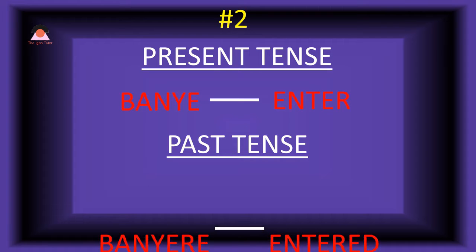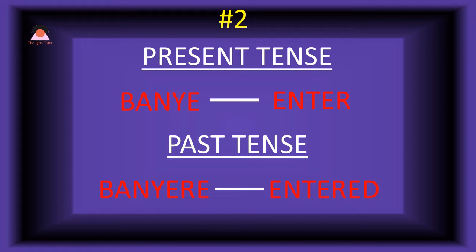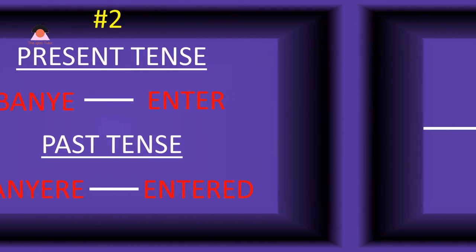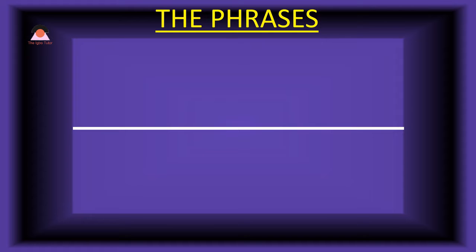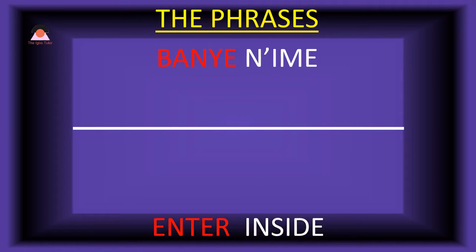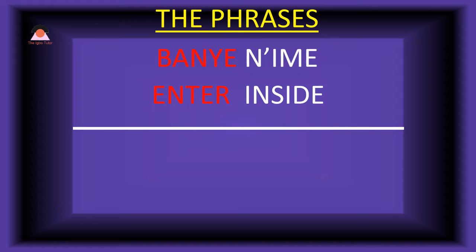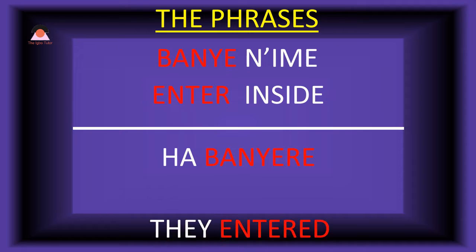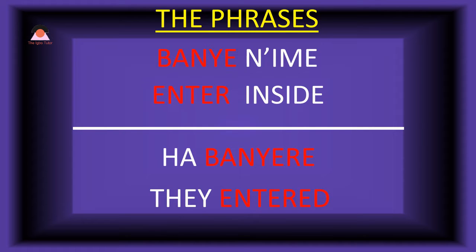Number two, present tense: 'banye,' which means 'enter.' And the past tense of banye is 'banyehre,' meaning 'entered.' Present tense usage: 'banyeh niimeh,' which means 'enter inside.' Past tense: 'ha-banyehre' — they entered.